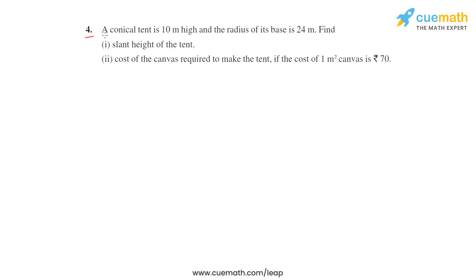In the fourth question, it is given a conical tent is 10 meters high and the radius of its base is 24 meters. Find the first slant height of the tent, second cost of the canvas required to make the tent if the cost of one square meter canvas is rupees 70. So they have given the height of the tent.